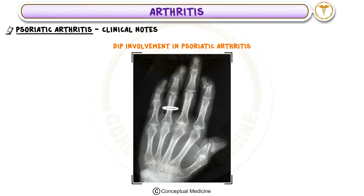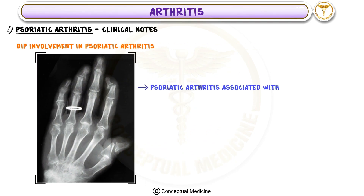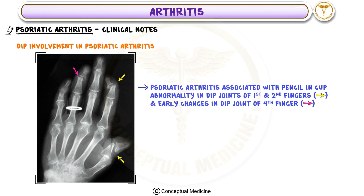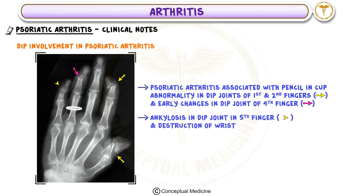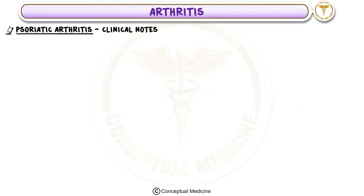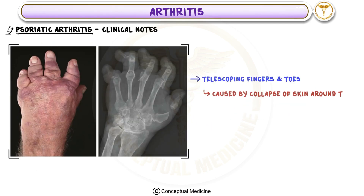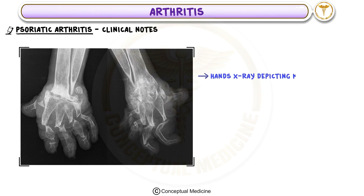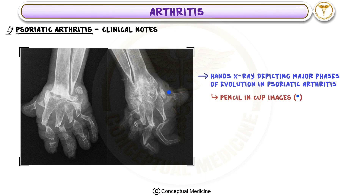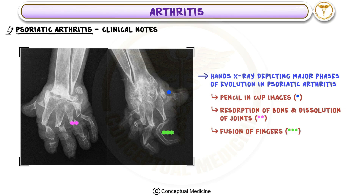Radiographic Examples of Psoriatic Arthritis: Psoriatic arthritis associated with pencil-and-cup abnormality in the distal interphalangeal joints of the first and second fingers, with early changes in the DIP joint of the fourth finger. Other changes include ankylosis in the DIP joint of the fifth finger and destruction of the wrist. Additional images depict telescoping fingers and toes caused by collapse of skin around damaged joints, and radiographs showing pencil-and-cup changes, bone resorption, dissolution of joints, and fusion of fingers.